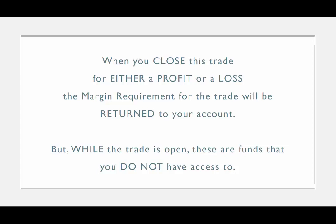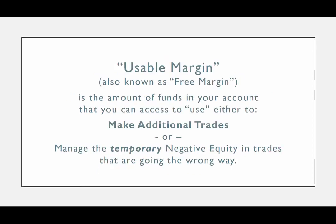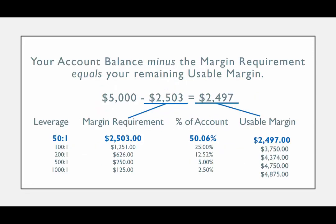When you close your trade, either for a profit or for a loss, whatever your margin requirement has been on the trade, that money will be refunded back into your trading account. But while the trade is open, you will not have access to these funds. Usable margin, also known as free margin, is the amount of money in your account that you can access to use either to make additional trades or to manage the temporary negative equity in trades that are going the wrong way. Your account balance minus the margin requirement equals your remaining usable margin.